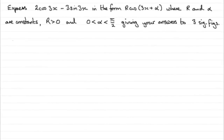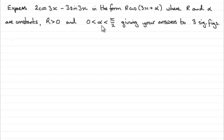For the first part of the question, we're asked to express 2cos3x minus 3sin3x in the form r cos(3x + α), where r and α are constants, r is greater than 0, and α lies between 0 and π/2. We've got to give our answers to three significant figures.